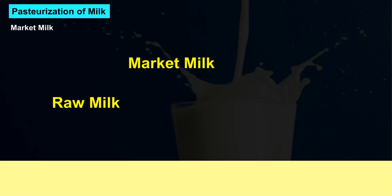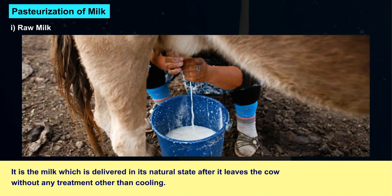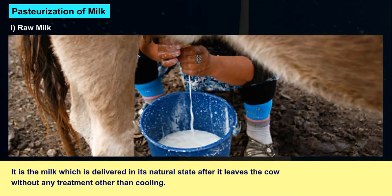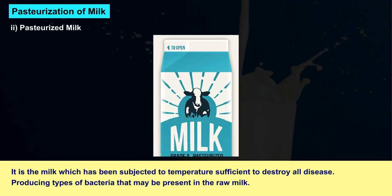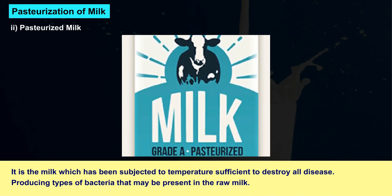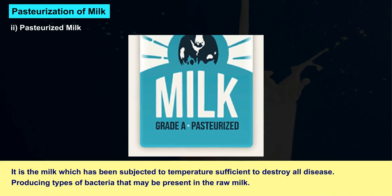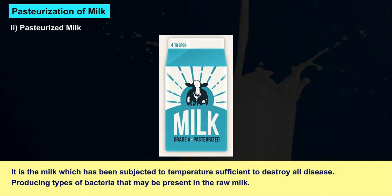First is raw milk, which is the milk delivered in its natural state. Second is pasteurized milk, which is the milk that has been subjected to a temperature sufficient to destroy all disease-producing types of bacteria that may be present in the raw milk.